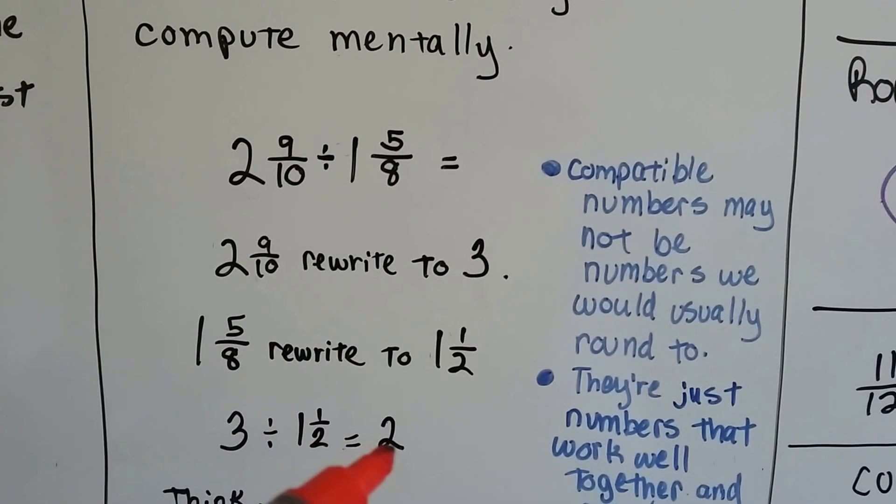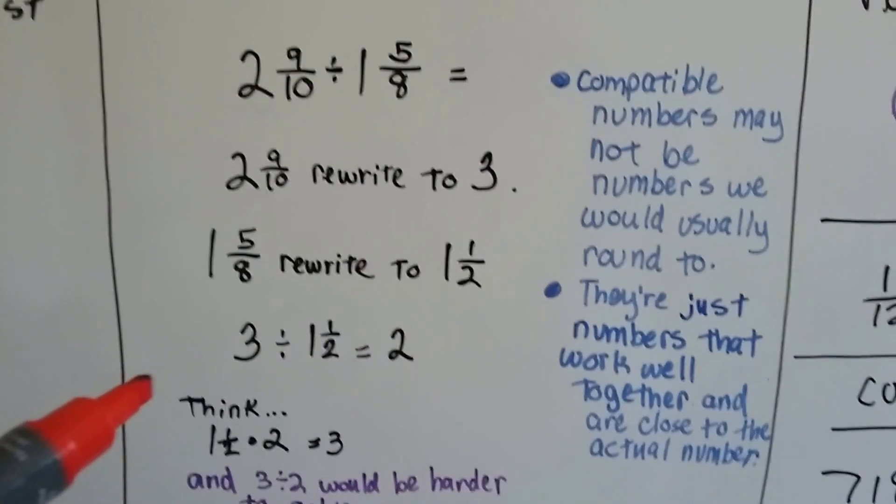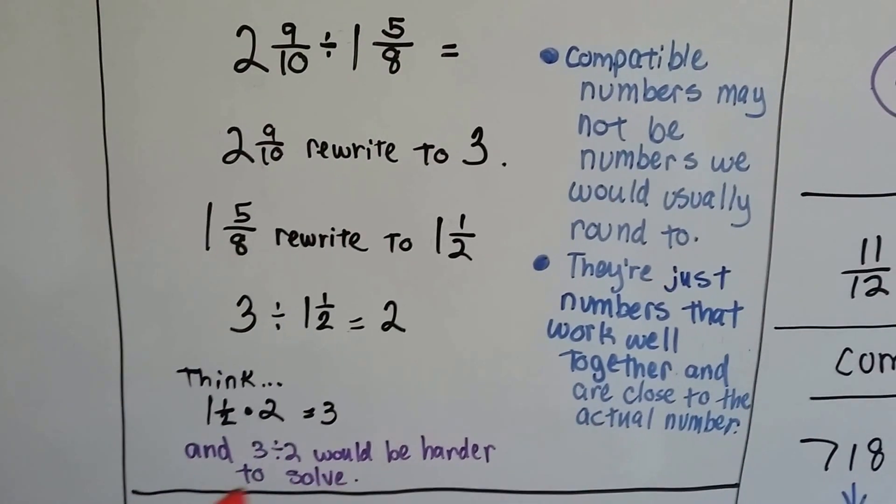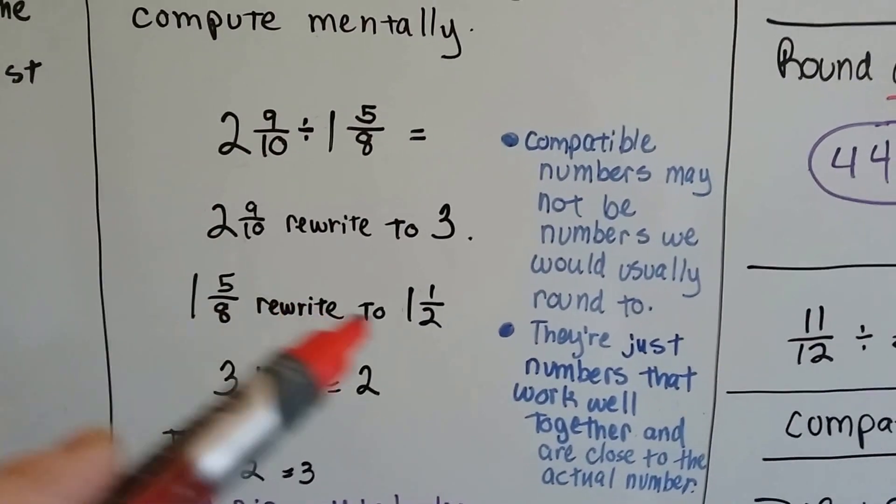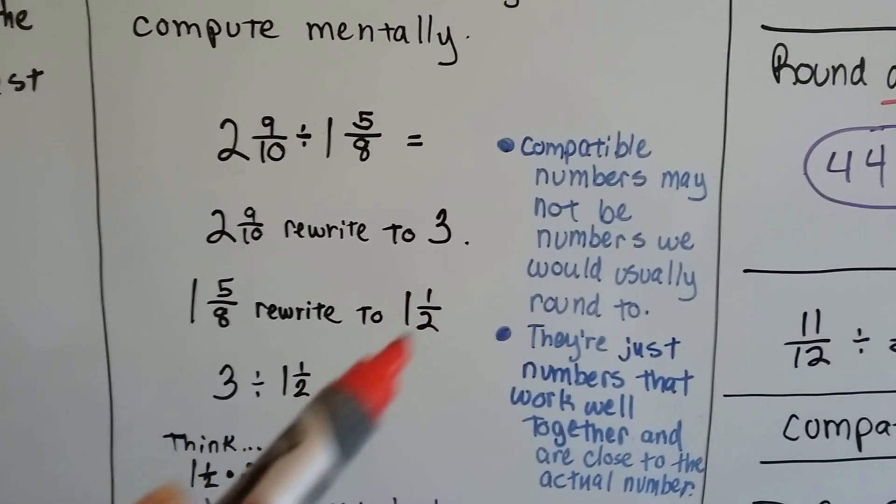Three divided by one and a half is two. It comes out as an even number. One and a half and one and a half make two. Three divided by two would be harder to solve. So we actually used a compatible number for three, which was one and a half, because two of them make three.